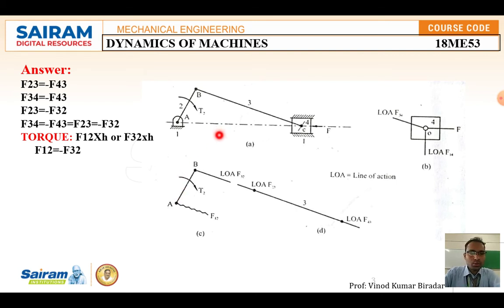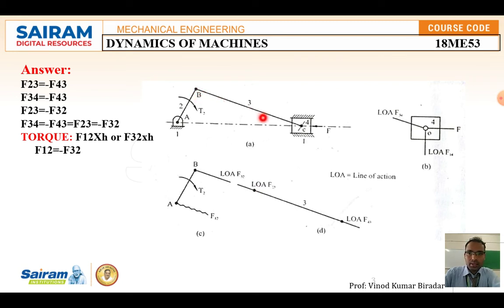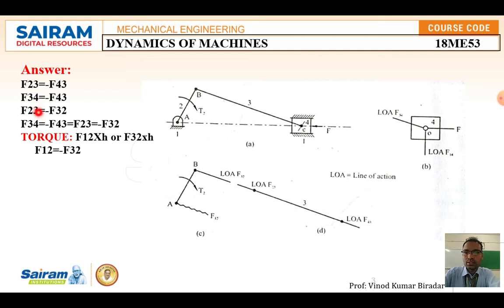According to Newton's principle, if F23 is acting on element three, then F43 acts in the opposite direction. Therefore, F23 equals minus F43 — the minus indicates the force acts in the opposite direction. Similarly, F32 and F34 have the same magnitude. If a force of 500 Newtons is given while solving, F43 takes the same value. F43 acts in the opposite direction, so minus indicates opposite direction.